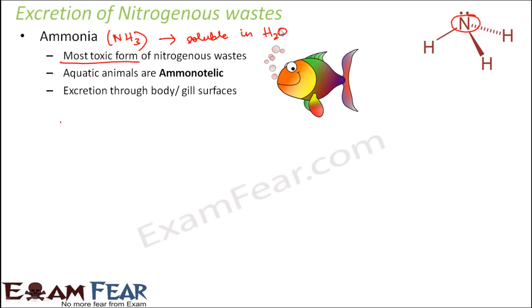Another characteristic of ammonia is that it is highly soluble in water. Since it is highly soluble in water, the animal excretes ammonia along with water. So as long as you want to excrete ammonia you also need to throw out a lot of water. You need a large amount of water to eliminate ammonia from the body. Since it is readily soluble in water it is excreted by the process of diffusion, generally in the form of ammonium ions dissolved in water.